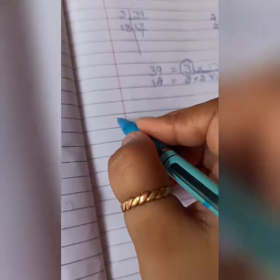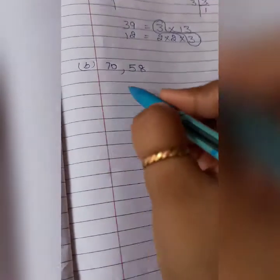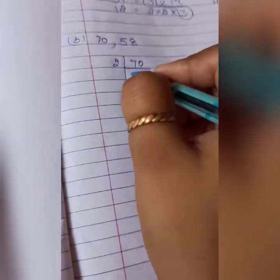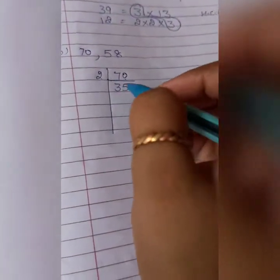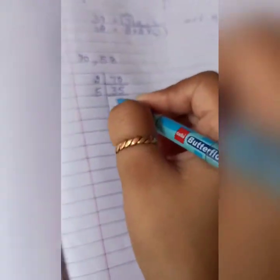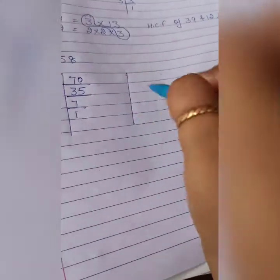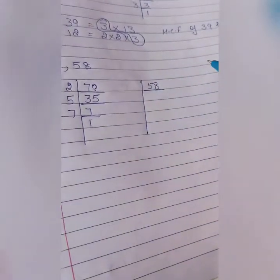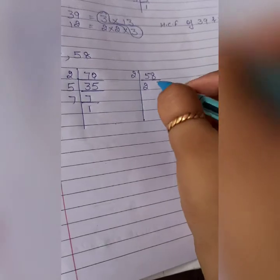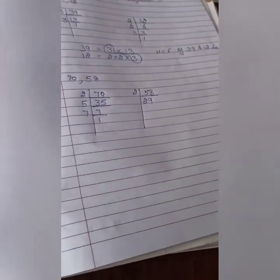Now second question, B part, 70 and 58. Now 70. See last digit is 0 so we can divide it by 2. 2 threes are 6, 1, 2 fives are 10. Now last digit is 5, I will divide by 5. But remember one thing, you will divide only with prime numbers. 5 sevens are 35, 7 ones are 7. 7 is also a prime number. Now 58. Last number is even number, so we will divide it with 2. 2 twos are 4, 1, 1 goes carry 18, 2 nines are 18. Now 29.